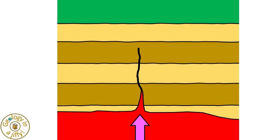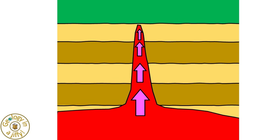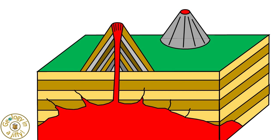As the magma forces its way further upwards, it opens up the fracture, so allowing more magma to flow upwards and further widen the fracture too. This continues as the magma forces its way towards the surface, until, when the fracture vents at the surface, a volcano is formed. Further magmatic flow up this fracture creates more lava flows, and this resultant dike now acts as the plumbing system for the volcanoes.